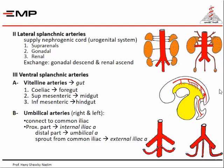Now we consider the fate of the umbilical arteries, which arise from the dorsal aorta and run into the umbilical cord — there are two, right and left. They first come out from the distal caudal part of the abdominal aorta, which will later become narrowed to form the median sacral. Therefore they change their point of origin to the common iliac artery.